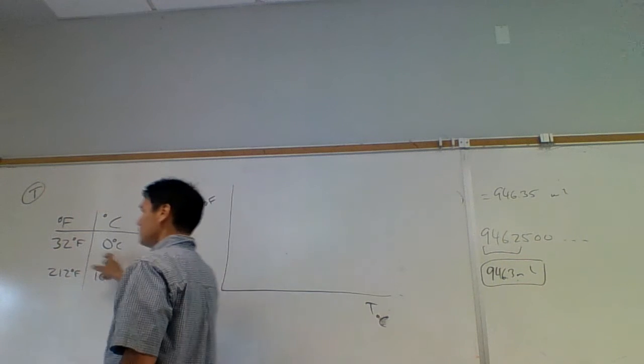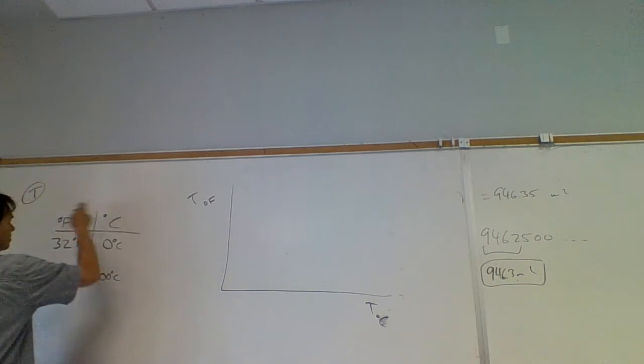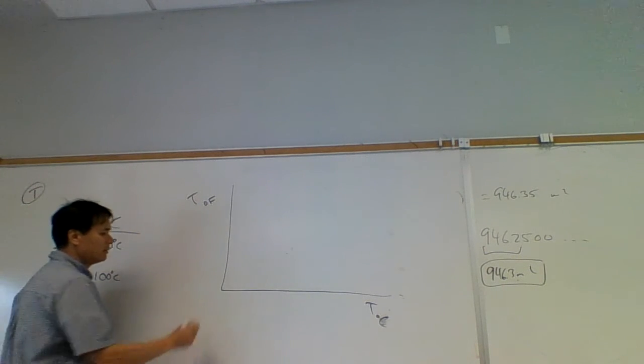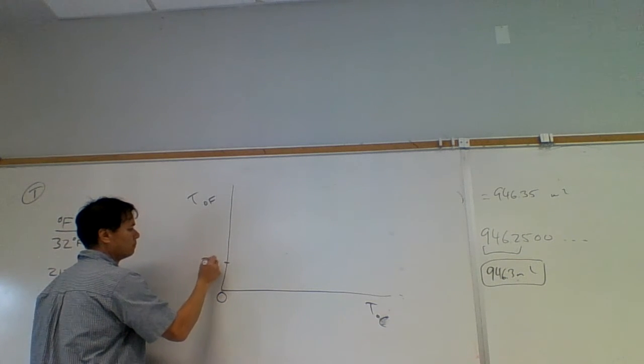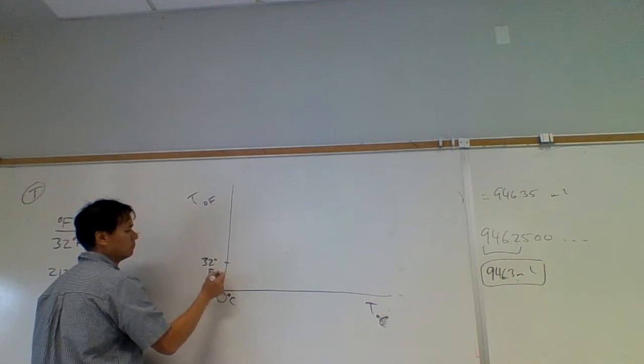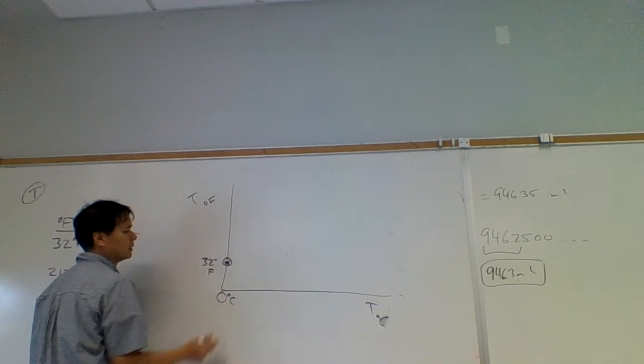I wrote this backwards. This is my x, this is my y. It doesn't matter. And so if I'm at zero degrees C, I'm at 32 Fahrenheit. So I have a data point here.